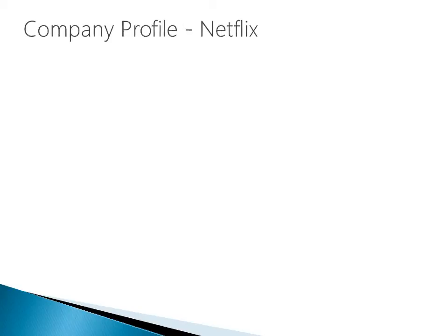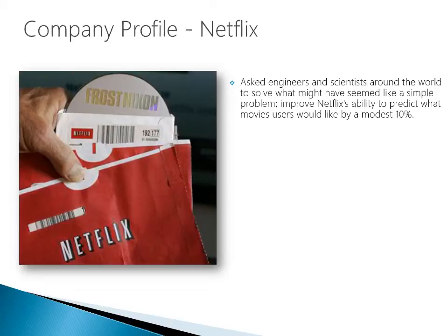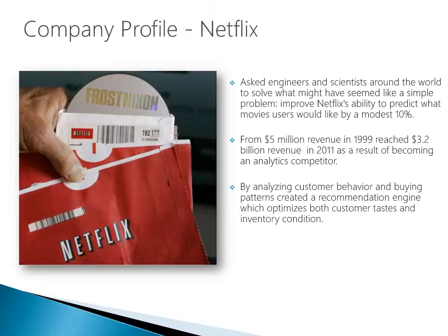I'd like to take a moment and talk about the company Netflix. Netflix asked engineers and scientists around the world to solve what seems like a very simple problem: improve Netflix's ability to predict what movies users would like by a modest 10%. From 5 million revenue in 1999, Netflix reached 3.2 billion revenue in 2011 as a result of becoming an analytics competitor. By analyzing customer behavior and buying patterns, they created a recommendation engine which optimizes both customer experience and inventory. At the heart of it, that question they posed is an association rule — a market basket analysis.